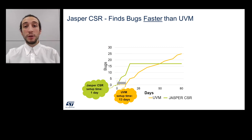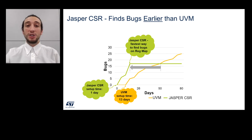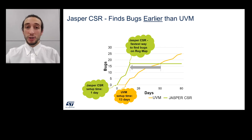Let's now look at the overall time savings with Jasper CSR. In addition to the setup time advantage we mentioned earlier, as soon as we gave Jasper the inputs, it generated the assertions and started identifying the initial bugs in less than half a day. In contrast, UVM took several weeks to find the same number of bugs.